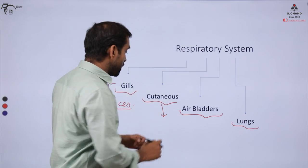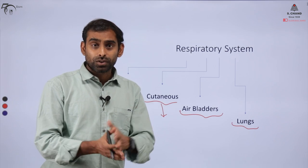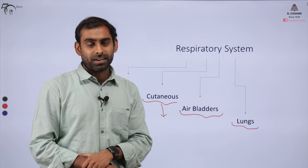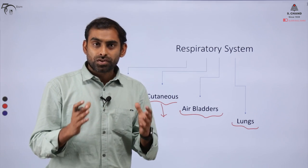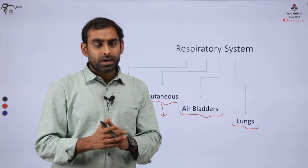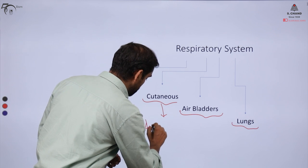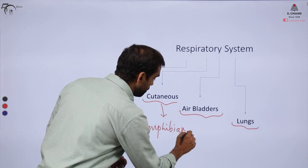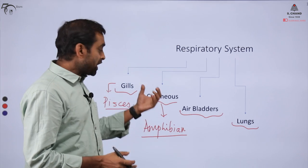We have another mode of respiration in some organisms. Humans can also take in oxygen and release carbon dioxide through their skin, but the percentage of gases exchanged through skin in mammals is very little. This proportion is significantly higher in the case of amphibians. Cutaneous respiration plays a very important role for amphibians, and they respire through their skin. Besides that, they also have other organs for respiration.